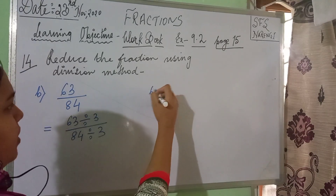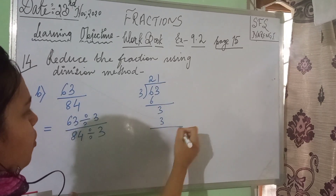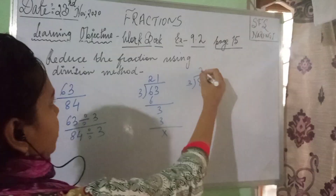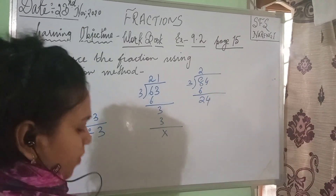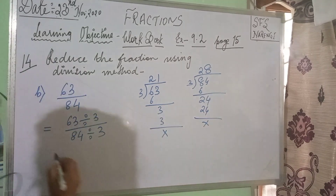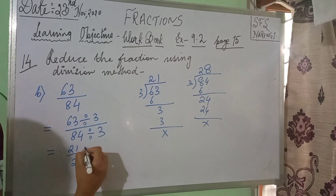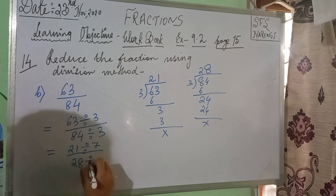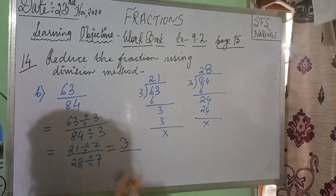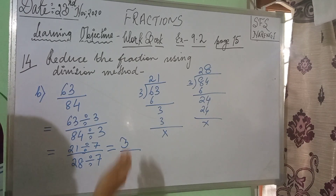Divide them by 3. If you divide 63 by 3, you get 21. If you divide 84 by 3, you get 28. So you get 21 by 28. Now 21 and 28 are both divisible by 7. After dividing by 7, you get 3 by 4. So 63 divided by 84 can be reduced to 3 by 4, and they cannot be reduced any further. This is the lowest form of the fraction 63 by 84.